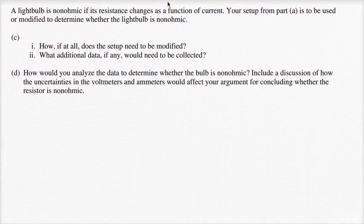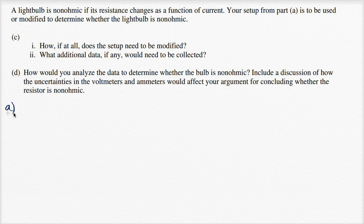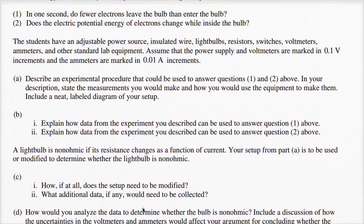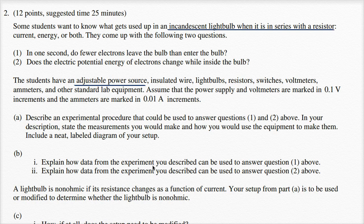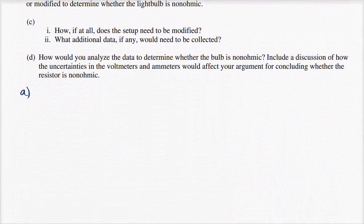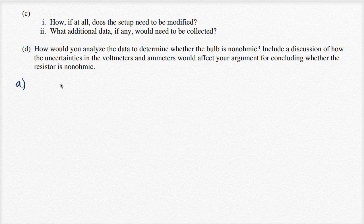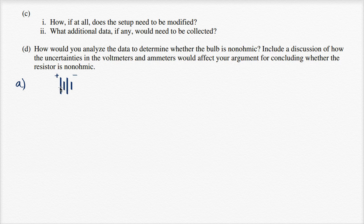For part A, we're going to have an adjustable power source in series with a resistor and an incandescent light bulb. I'll draw the power source — the positive end and negative end — then add the resistor, and then the incandescent light bulb symbol, which is a small bump inside a circle. I'm trying to do it neatly since the problem asks for a neat diagram.